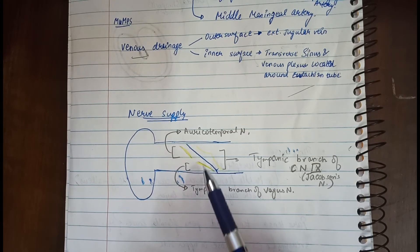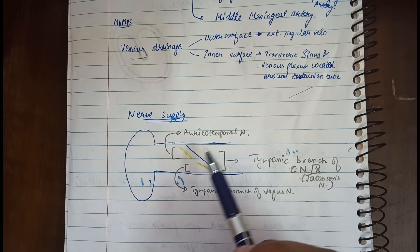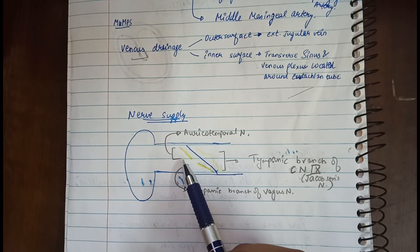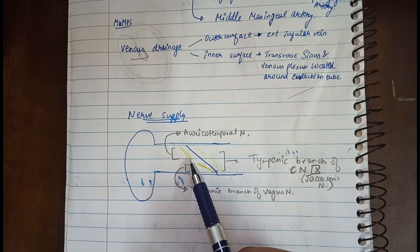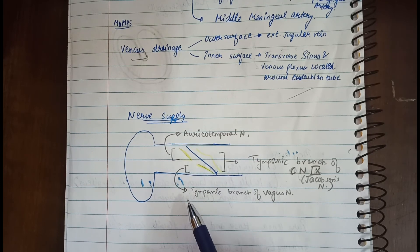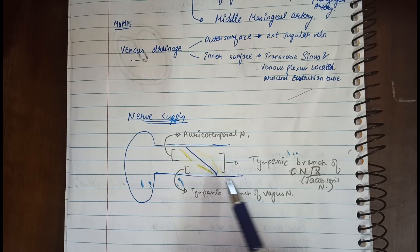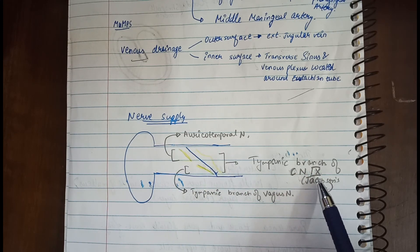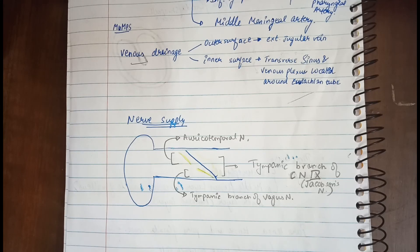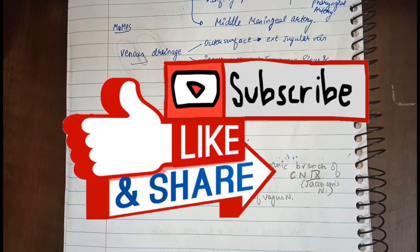For nerve supply, the lateral surface of the tympanic membrane is supplied by two nerves: the anterior half by the auriculotemporal nerve, and the posterior half by the tympanic branch of the vagus nerve. The medial surface is supplied by the tympanic branch of cranial nerve nine, also called Jacobson's nerve. That concludes the topic of the tympanic membrane.